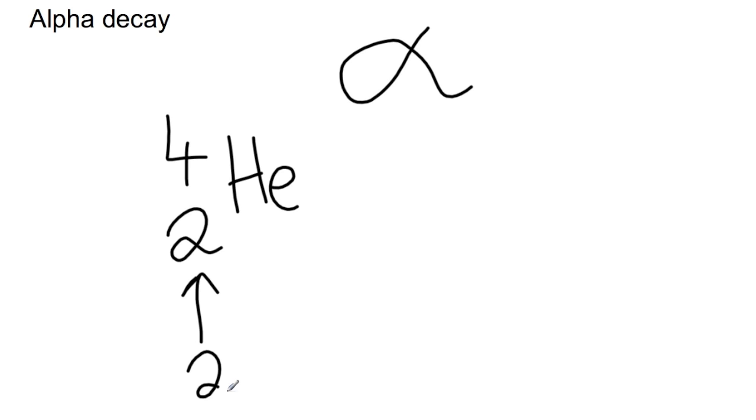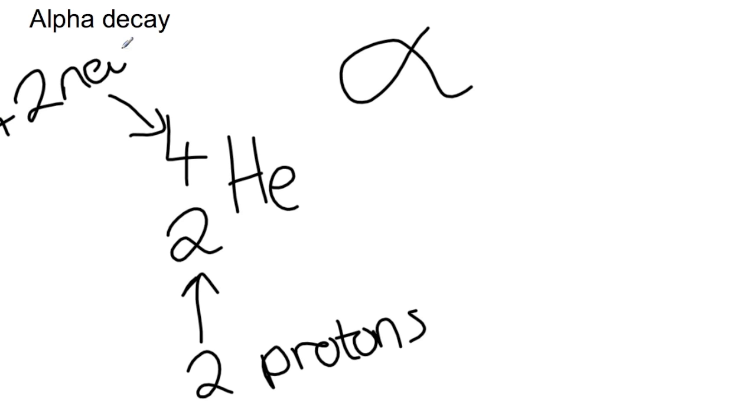The two here shows that you have two protons that are being lost. And the four at the top here shows that in addition to the two protons, you also have two neutrons that are being lost. Using this sort of nuclide notation allows you to carry out the equations that we'll be looking at.